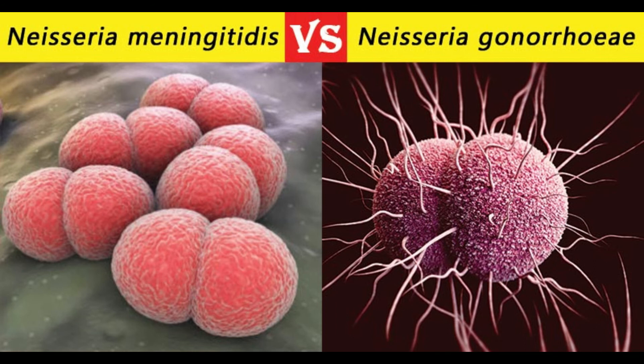27. Related conditions: N. gonorrhoeae can also cause conjunctivitis, pharyngitis, proctitis, urethritis, prostatitis, and orchitis. N. meningitidis causes meningitis and other forms of meningococcal disease such as meningococcemia, a life-threatening sepsis. 28. Specimen transport: N. gonorrhoeae — swab of endocervix, urethra, rectum, pharynx, conjunctiva, blood, and joint fluid; N. meningitidis — aspirates from skin lesions, cerebrospinal fluid (CSF), blood, swab of skin lesions, and nasopharynx.